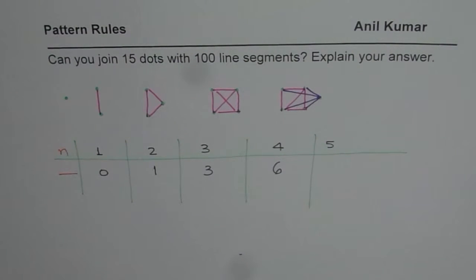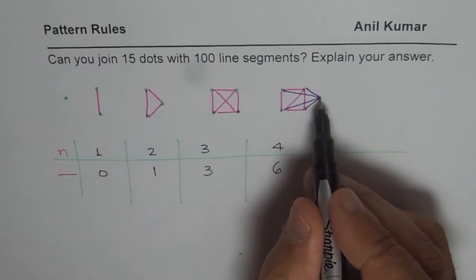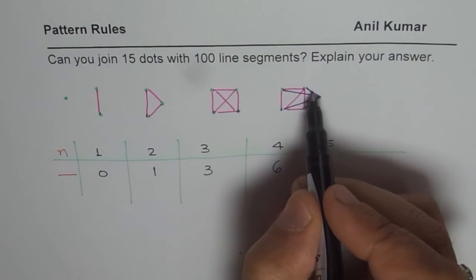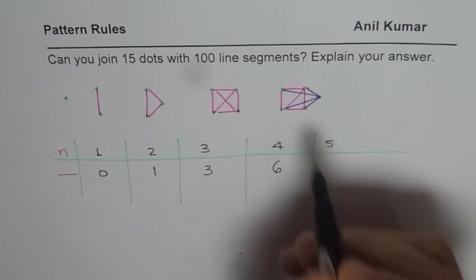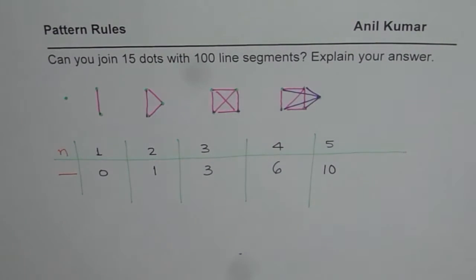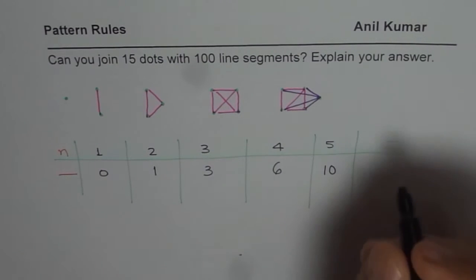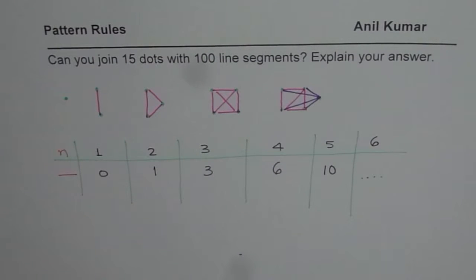Now if I have five dots, in the previous case I had six. The extra connections add seven, eight, nine, ten — so with five dots I have ten segments. Likewise you can draw the sixth case as an exercise and figure out the number, which will give you a very clear idea of how segments increase as dots increase.